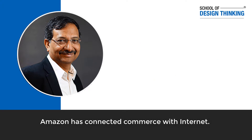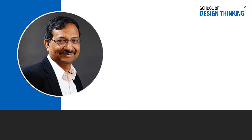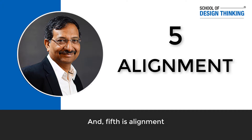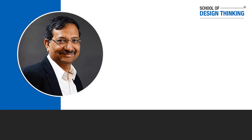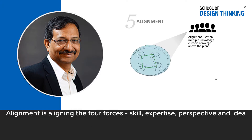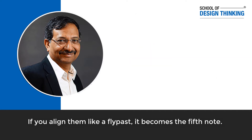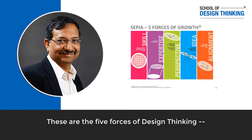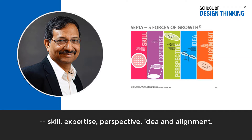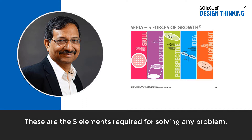Amazon connected commerce onto the internet, and it became e-commerce. Fifth is alignment — aligning all four forces: skill, expertise, perspective, and idea. If you align them together and fly together like a flying past, it becomes the fifth note. These are the five forces of design thinking: skill, expertise, perspective, ideas, and alignment.